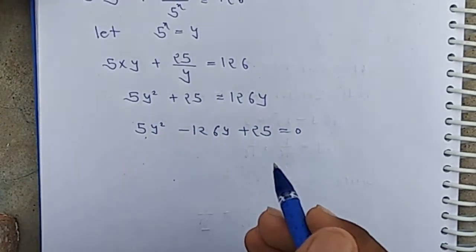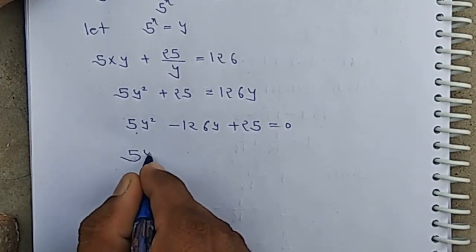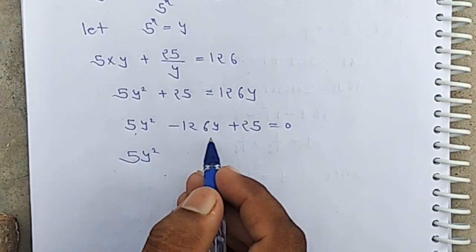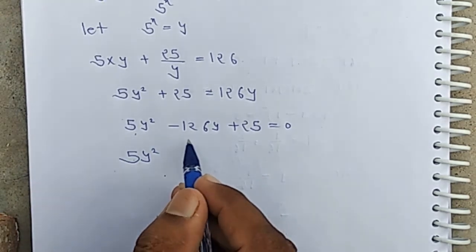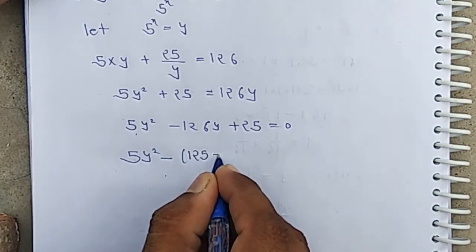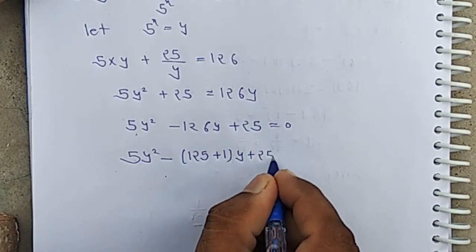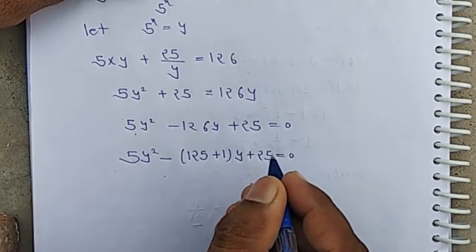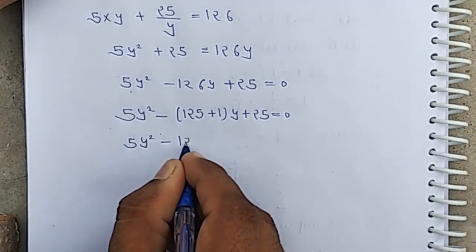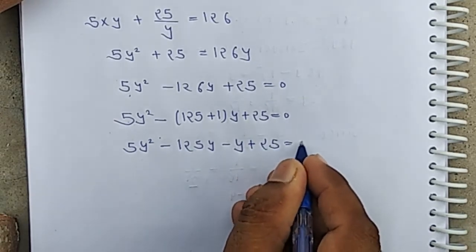5 into 5 into 25 means 125. The factor of 125 such that their sum is 126 is 125 plus 1. So we rewrite: 5y squared minus 125y minus y plus 25 equal 0.